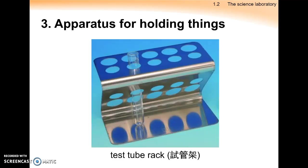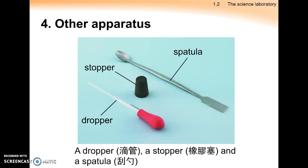For holding a large number of test tubes, a test tube rack may be used. There are also other apparatus such as a dropper, stopper, and spatula. A dropper is used to transfer small amounts of liquid, while a spatula is like a spoon which can help transfer small amounts of solid. A stopper is important to seal a test tube and make it airtight.